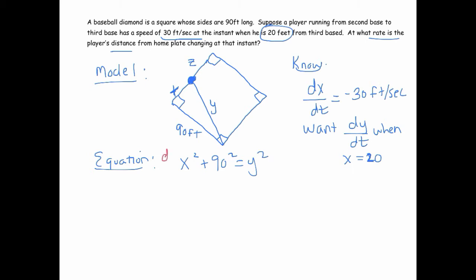And now we need to take the derivative of both sides with respect to time. So we get 2x plus, sorry, 2x dx dt. Plus the derivative of 90 squared is zero because that's a constant, equals 2y times dy dt. And now we substitute and solve.